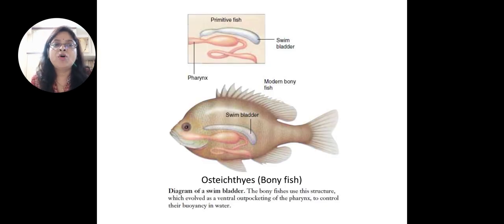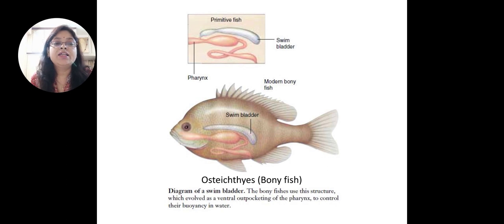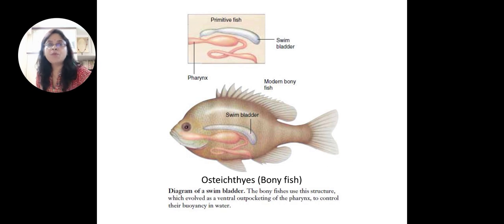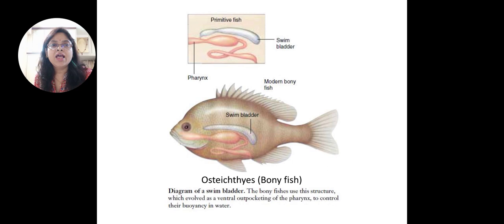An additional characteristic feature of Osteichthyes is that there is a swim bladder present in bony fishes. In primitive bony fish, the swim bladder is attached to the pharynx. In modern bony fishes, the swim bladder is on top of the alimentary canal and does not need to be attached to the pharynx — it can be attached to the intestine.